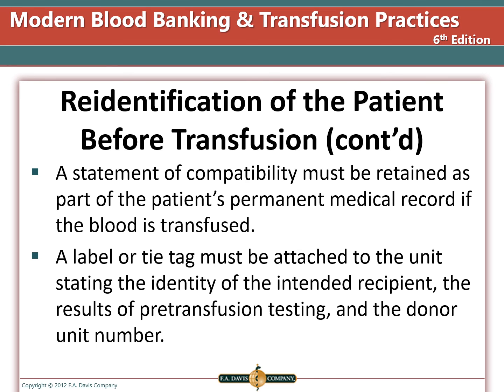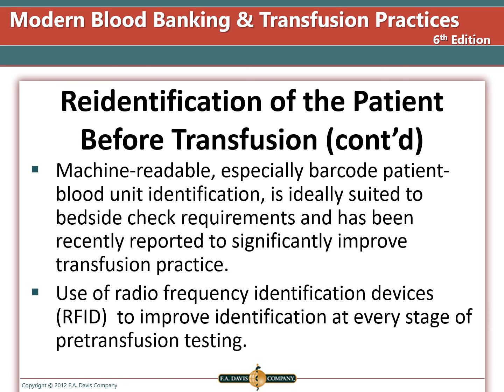A statement of compatibility must be maintained as part of the patient's permanent medical record. If the blood is transfused, a label or tie tag must be attached to the unit stating the identity of the intended recipient, the results of pre-transfusion testing, and the donor unit number. Machine-readable, usually barcode, patient and blood unit identification are ideally suited to bedside check requirements and have been reported to significantly improve transfusion practices.